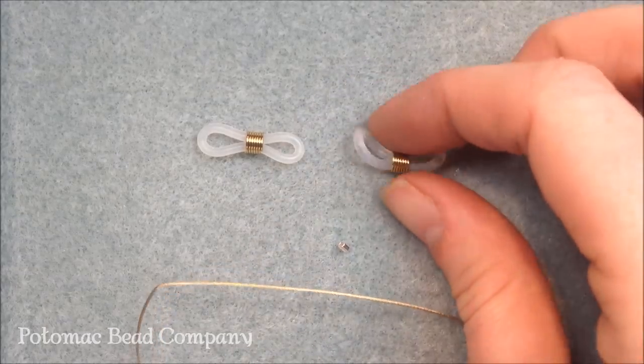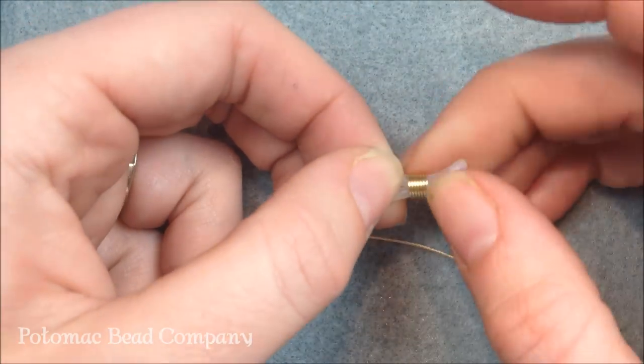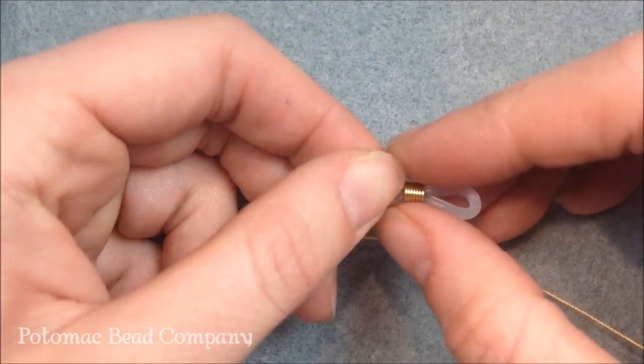What you want to start out with are eyeglass holders. These are just little rubber pieces that have some wire in the middle. These move around so that they'll clench onto the sides of your glasses.